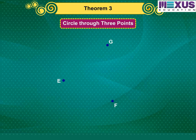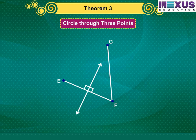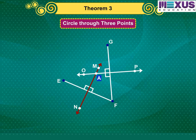So, let us take three points, E, F and G, which are not on the same line or in other words, they are not collinear. Draw perpendicular bisectors of EF and FG, say MN and OP respectively. Let these perpendicular bisectors intersect at one point, A. MN and OP will intersect because they are not parallel.